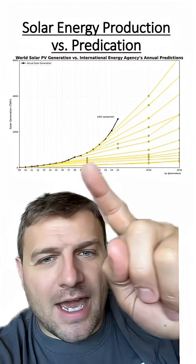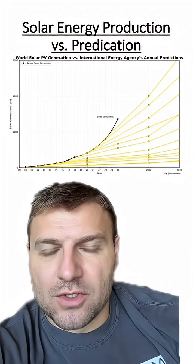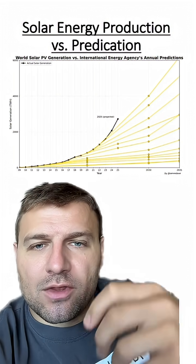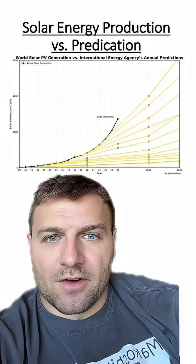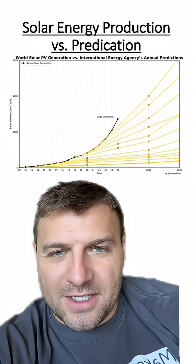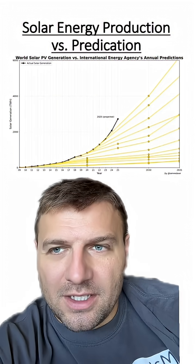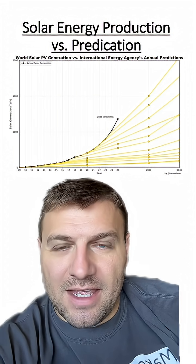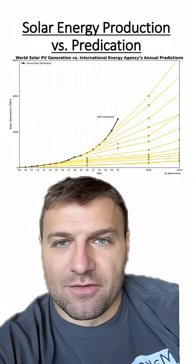The black line here shows the actual power generation from solar energy. Yellow lines show the predicted solar generation from previous years, and from what you can see, the predicted values really underestimated the actual power generation from solar energy.